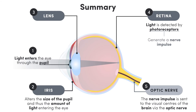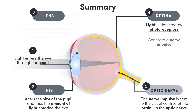In bright light, the pupil is said to be constricted, and in dim light the pupil is dilated. The eye is able to focus on objects at different distances by changing the shape of the lens in a process called accommodation.